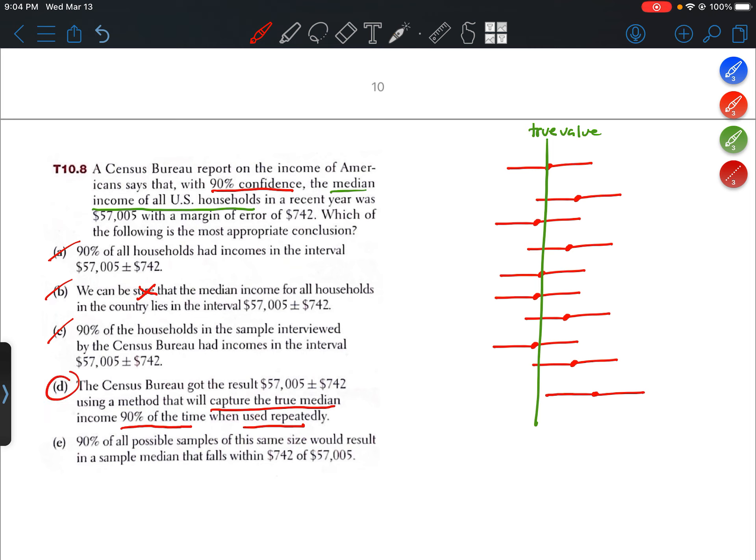Let's just read E for kicks. 90% of all possible samples of this same size would result in a sample median that falls within the interval. Yeah, so this one never talks about capturing the true value. So that's not it.